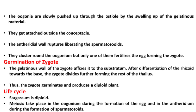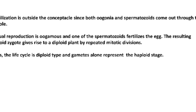Life cycle. Sargassum is diploid. Meiosis takes place in the oogonium during the formation of the egg and in the antheridium during the formation of spermatozoids. Fertilization is outside the conceptacle, since both oogonia and spermatozoids come out through the ostiole. Sexual reproduction is oogamous and one of the spermatozoids fertilizes the egg. The resulting diploid zygote gives rise to a diploid plant by repeated mitotic divisions. Thus, the life cycle is diplontic and gametes alone represent the haploid stage.